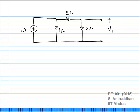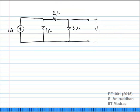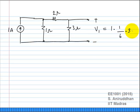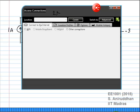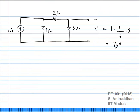Consider an example: what is voltage V1? With a 1-ampere current source, it splits between a 1-ohm and a 5-ohm resistor in parallel. The current flowing through the 5-ohm branch is 1/6 of 1 ampere, and multiplied by the 3-ohm resistor gives V1 equals 3/6 which is half a volt.